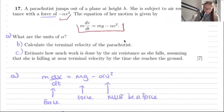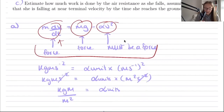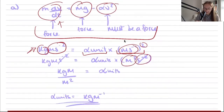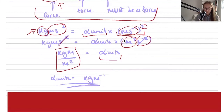Since minus alpha v squared is a force, it must have units of force: kg·m·s⁻². We know that kg·m·s⁻² equals the units of alpha multiplied by velocity squared (m²·s⁻²). Cancelling s⁻² from both sides and dividing by m², the units of alpha are kg/m.